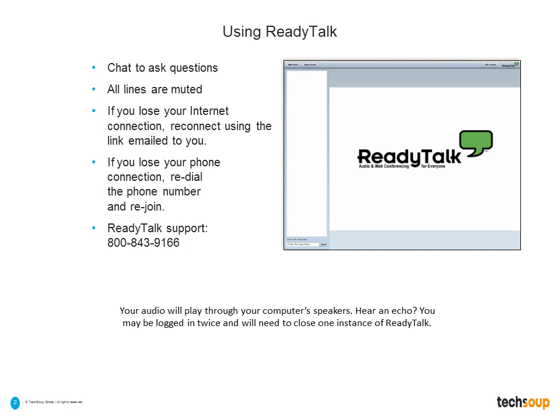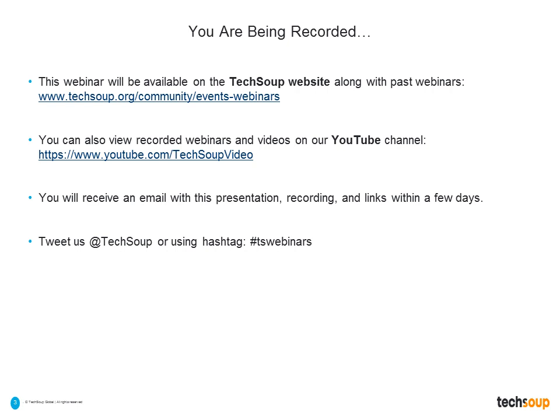If you lose your Internet connection, you can use the link that was emailed to you in your confirmation or reminder email. If you are calling in by phone and you lose your connection, just redial using the phone number, and I will be chatting that out periodically. All lines are muted so that we can get a good, clear recording. This is being recorded, and we will notify you when the recording is available. The email will have a link to the recording and a link to Beth's presentation, so no need to copy down everything Beth says. We will send you her full PowerPoint presentation after the event.